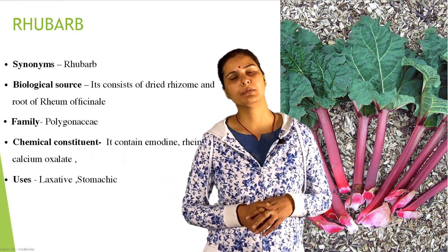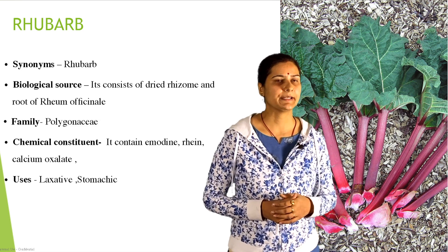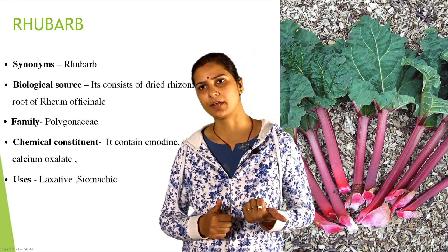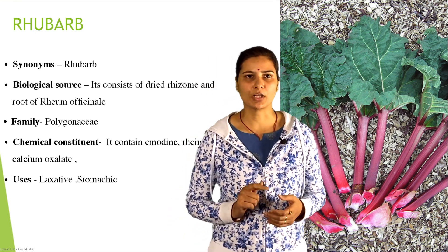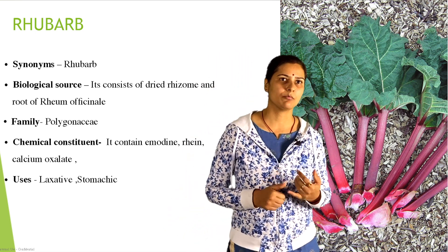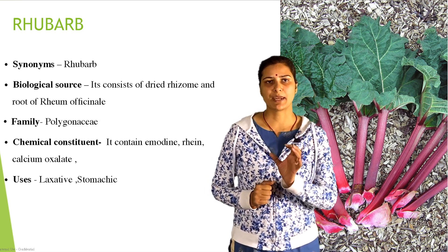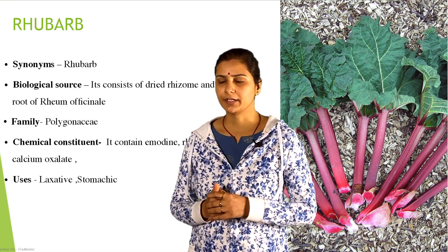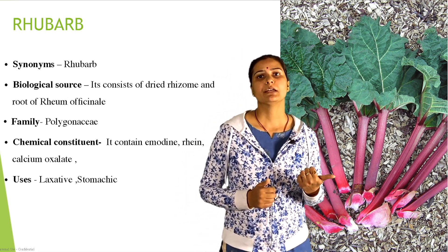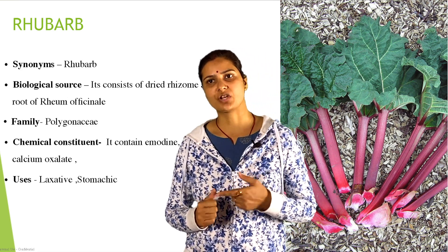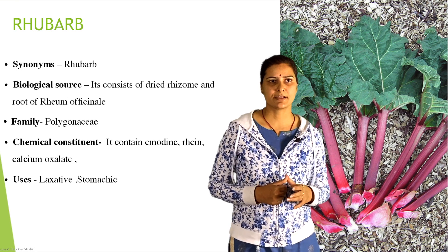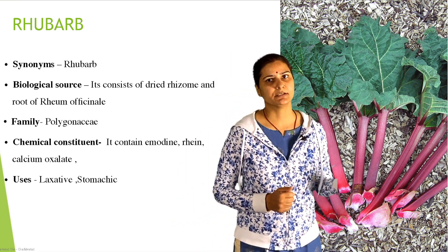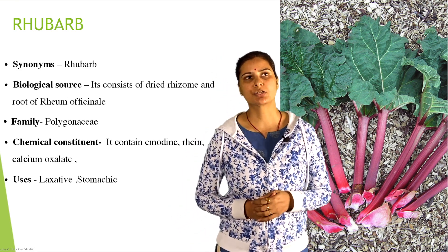Fourth drug: rhubarb. Synonym: rhubarb. Biological source — it consists of dried root and rhizome of Rheum officinale. Genus: Rheum; species: officinale; family: Polygonaceae. Chemical constituents: emodin, calcium oxalate, and rhein. Main active constituents are emodin and rhein. Geographical source: cultivated and indigenous to Afghanistan, Japan, and India. Uses: laxative and stomachic. Stomachic means it improves appetite and digestion.